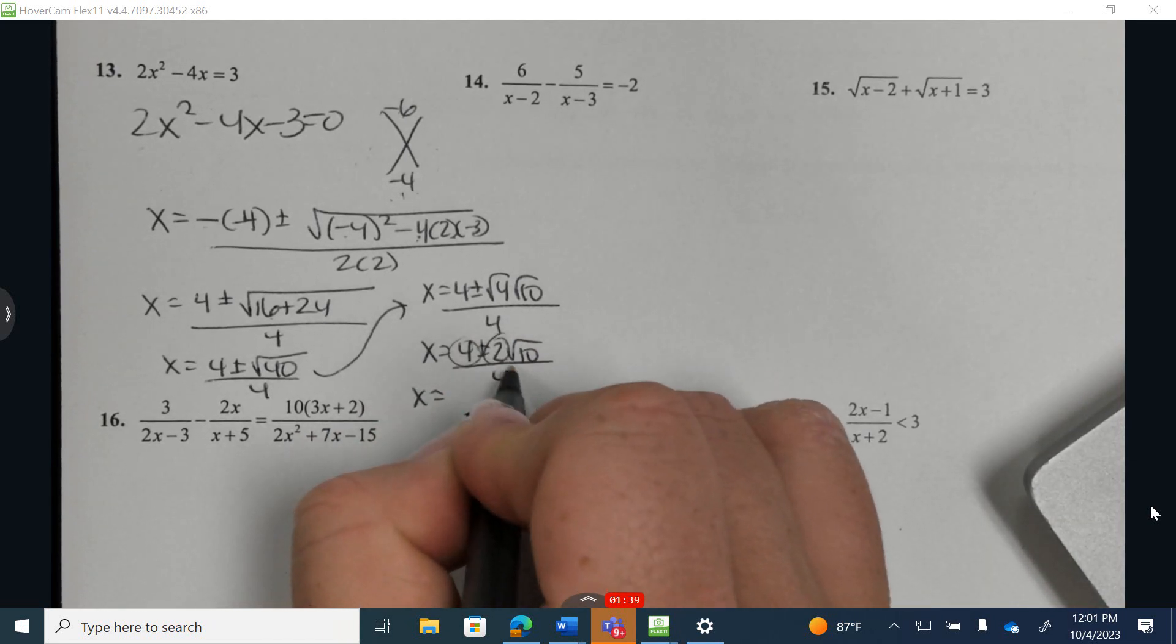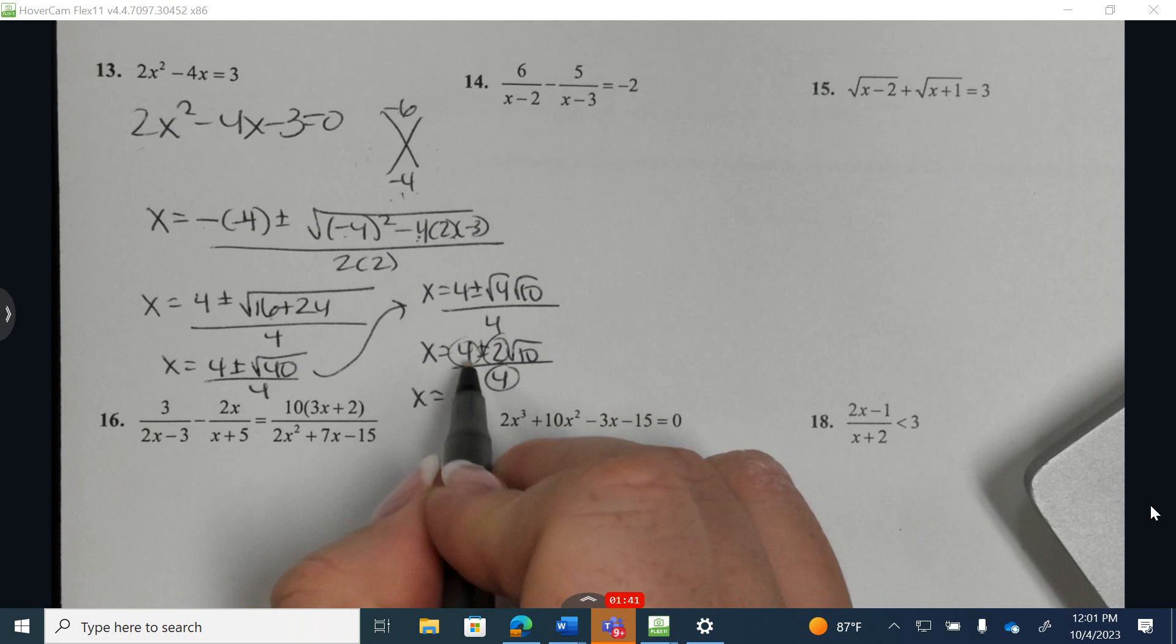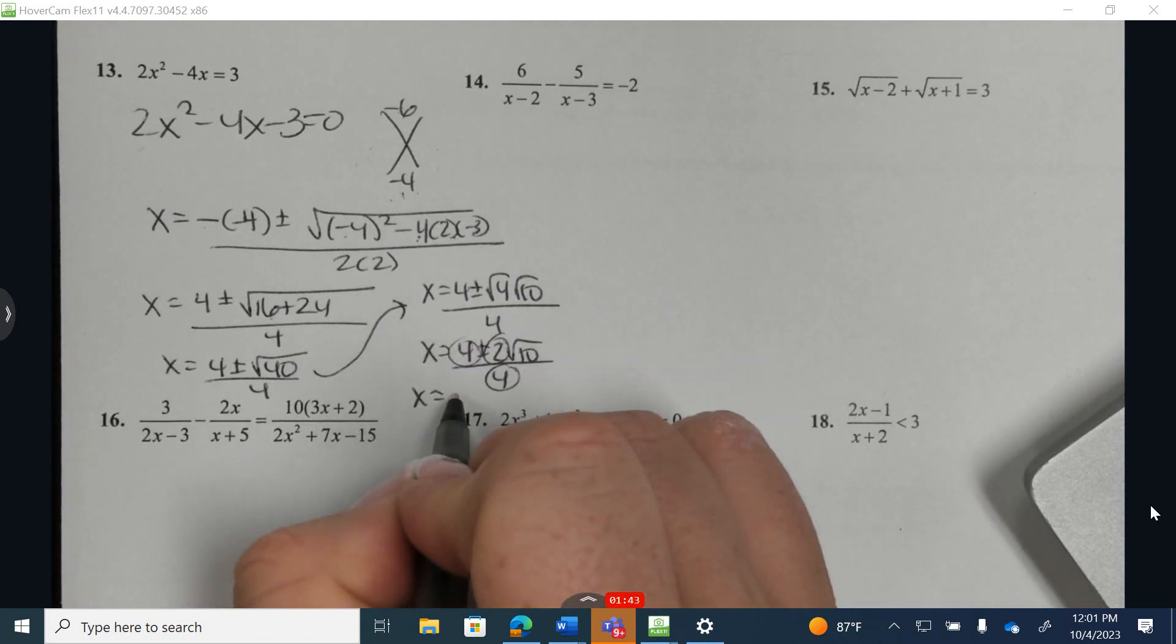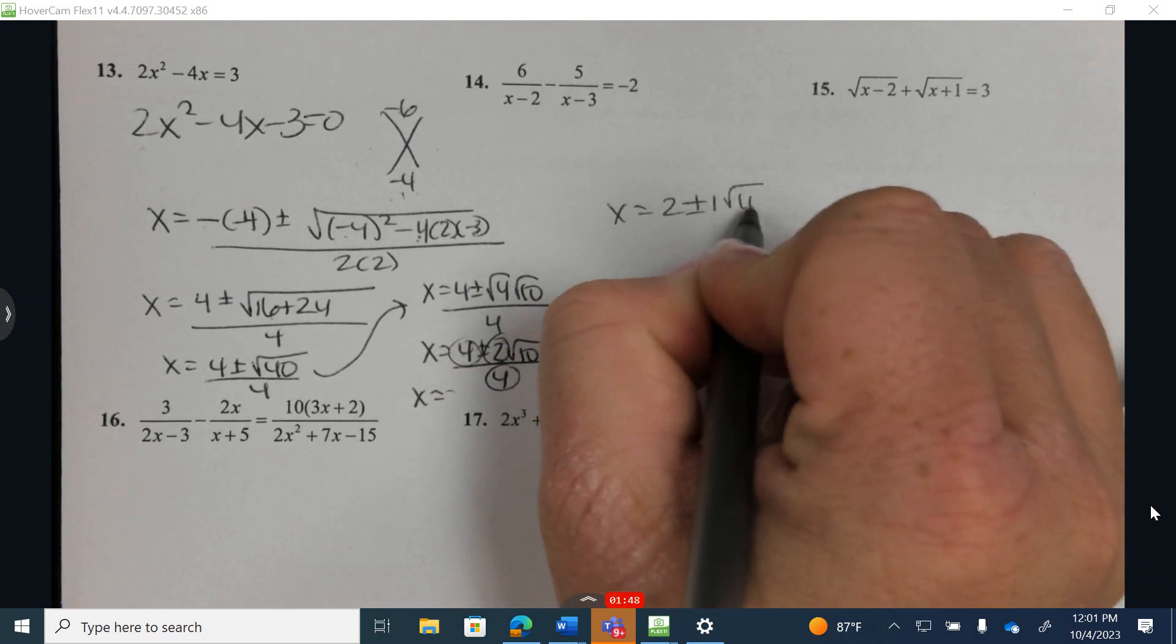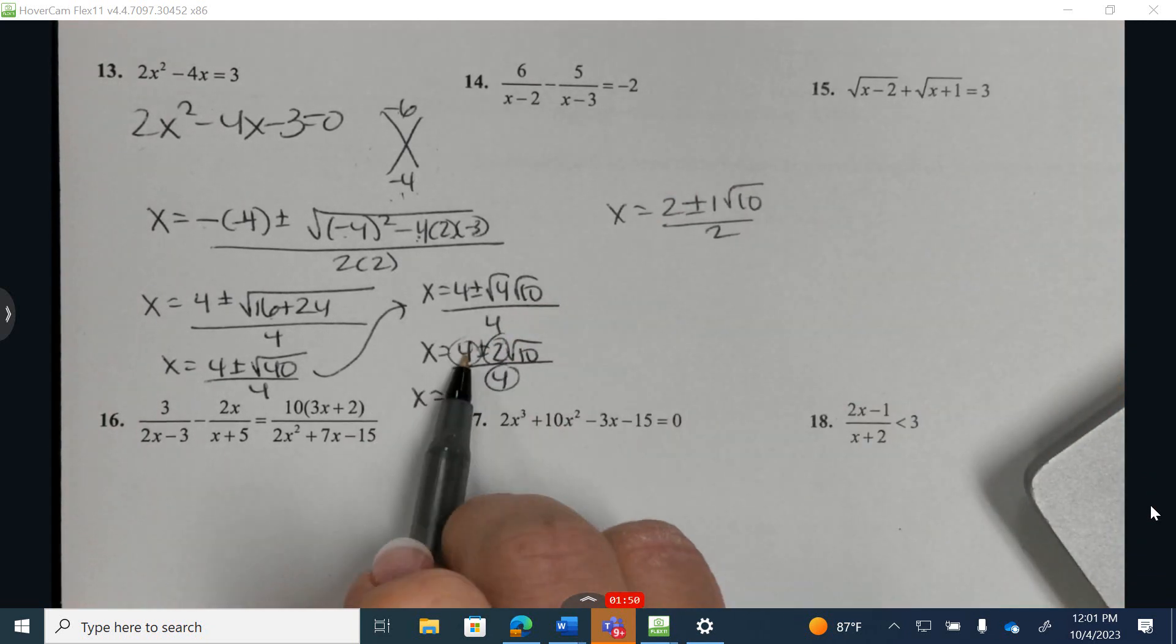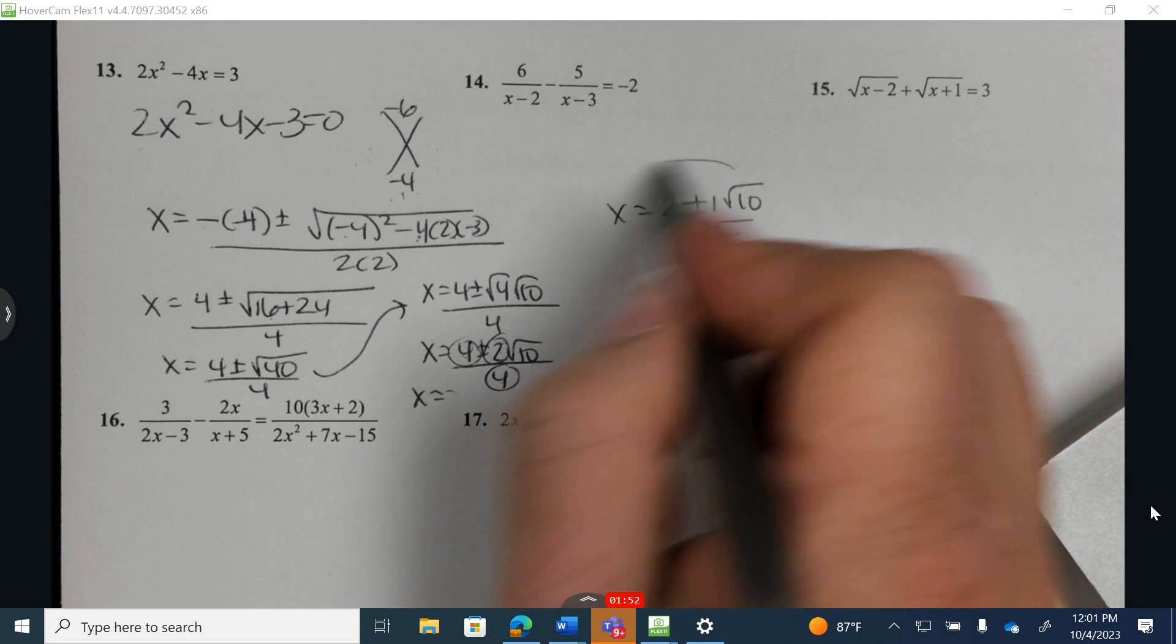And these are the 3 that I'm trying to reduce the like terms. They are all divisible by 2. So if I come up here where you guys can see this, I have 2 plus or minus the square root of 10 over 2. So divide by 2, divide by 2, divide by 2, and divide by 2.